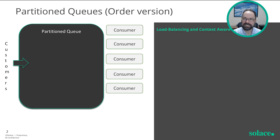We need something that not only does load balancing, but is also context-aware. Enter partition queues. Partition queues leverage a message header called a key. What's a key?